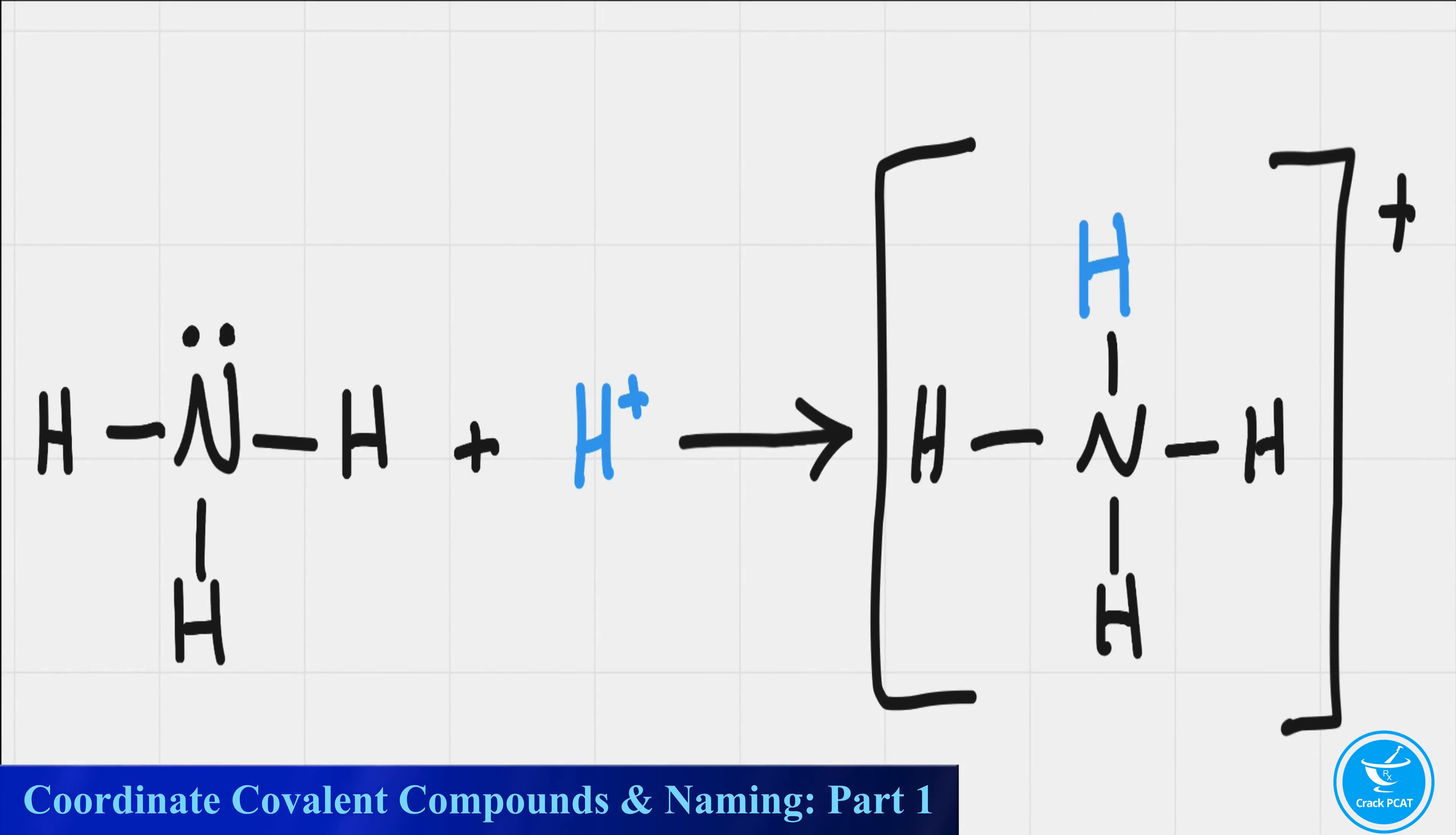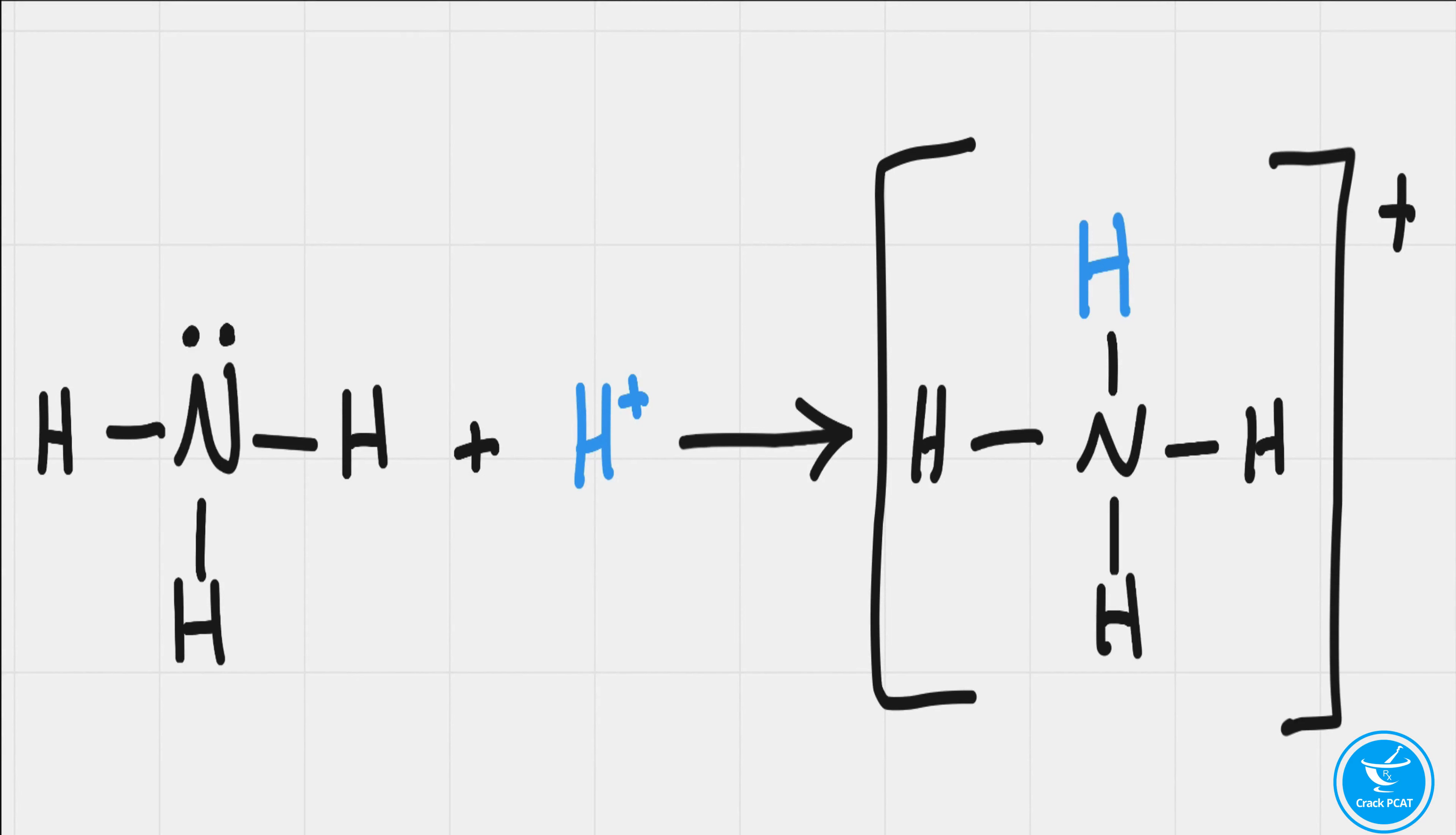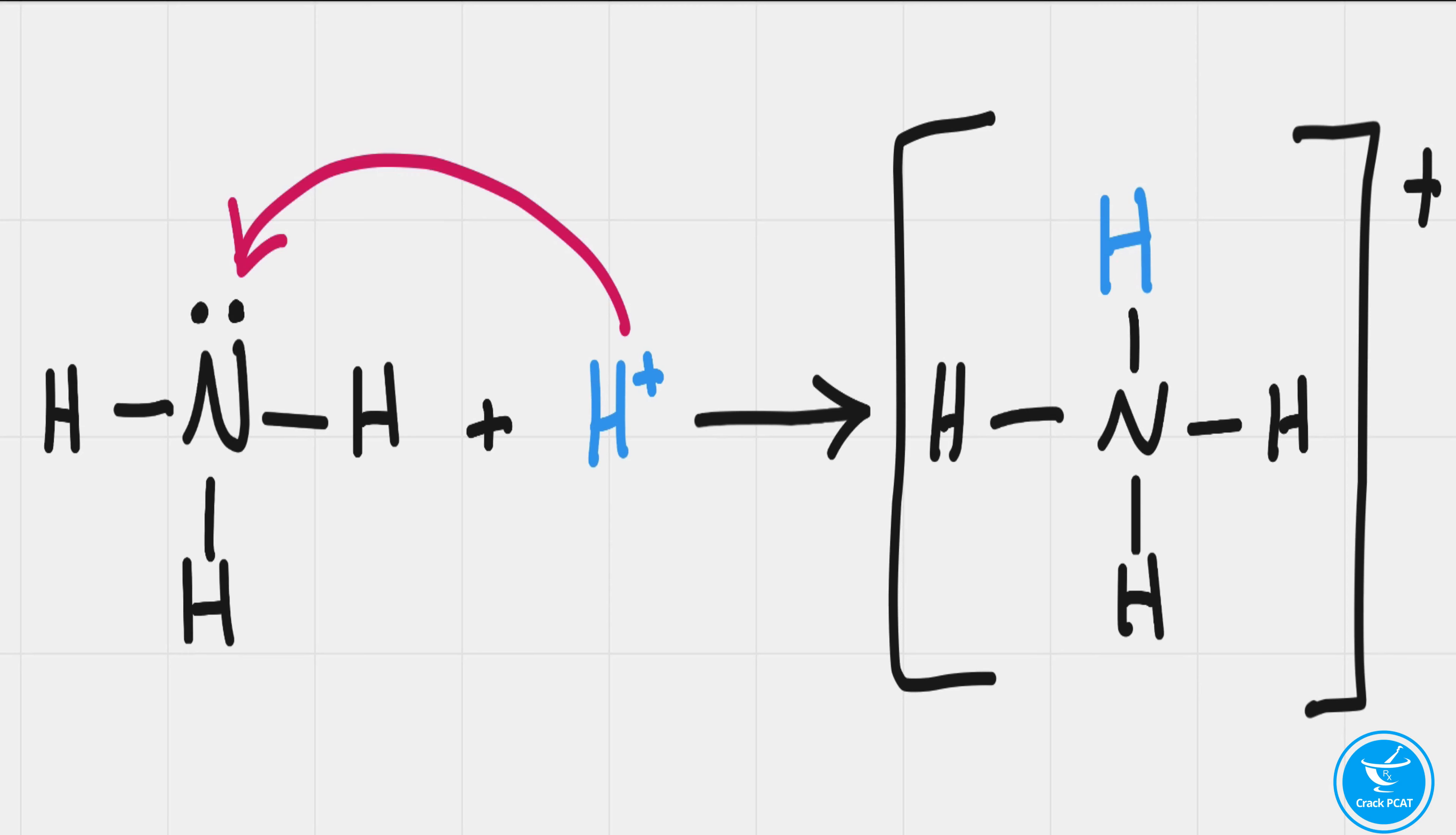Recall that a hydrogen ion doesn't have any electrons. In the formation of the ammonium ion, the hydrogen ion uses the lone pair of electrons found next to the central atom in ammonia, which is nitrogen.